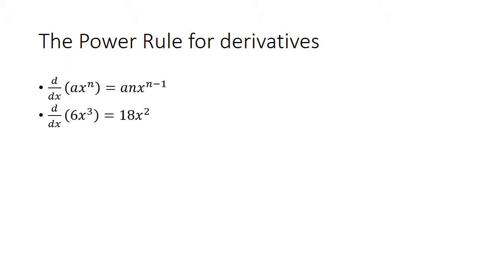6x cubed, and you want to take the derivative? Well, you simply take 3 times 6, which is 18, and you subtract 1 from the 3 and get the 2. Very simple.